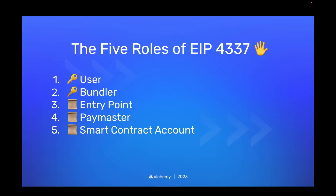The five roles of EIP 4337 are: a user, a bundler, an entry point, a paymaster, and a smart contract account. The first two are off-chain, and the last three are smart contracts that are going to be deployed on-chain.